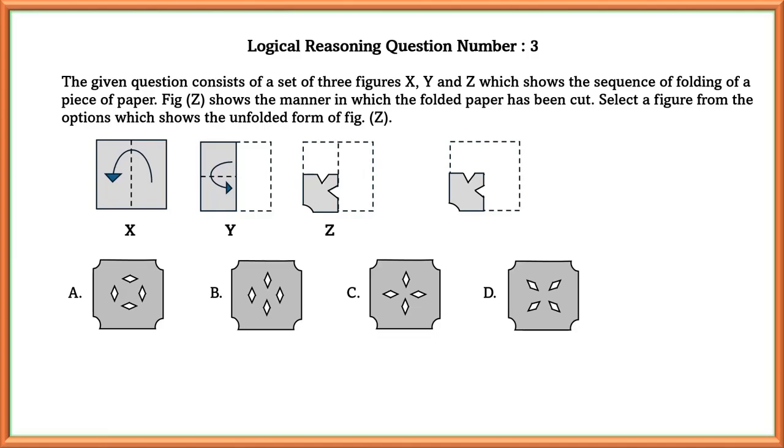Select a figure from the options which shows the unfolded form of figure Z. If we open this figure Z, we can see that one side will be like this. So if we open it again, we can see that the image formed corresponds to option A.